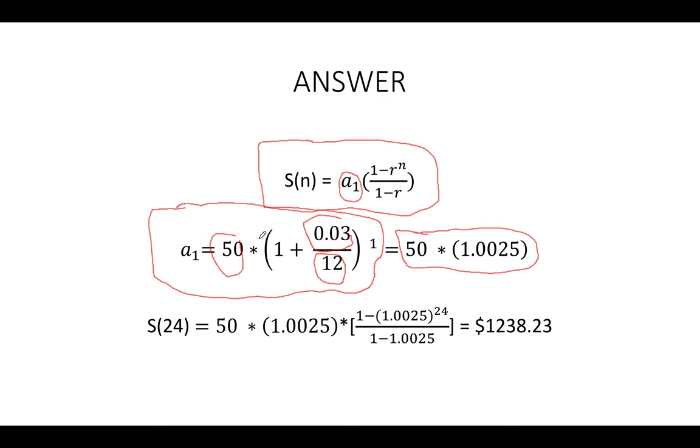All I did was I used a₁, I plugged my answer into here. I used my rate, my total rate. Be careful, r is no longer 0.03, r is now 1.0025, the total rate for the whole 24 months. This is two years, there's 12 months per year, so this is my r now. This value I plug in here, and n is 24 because it's 24 months in two years. Then I just use a calculator and I got this: $1238.23. That's a lot of money summed up.